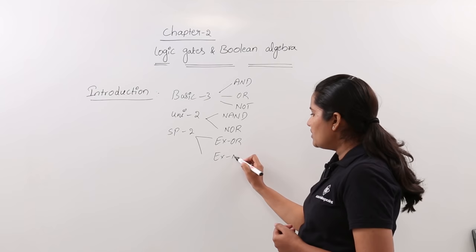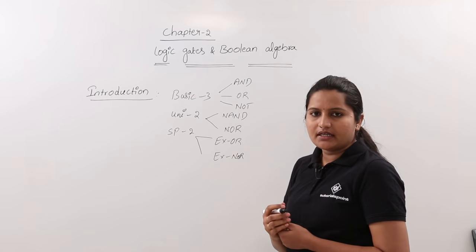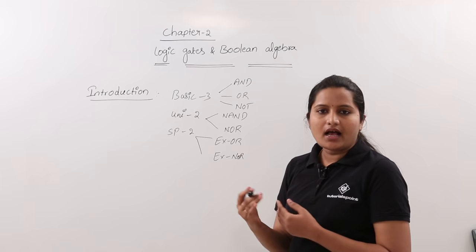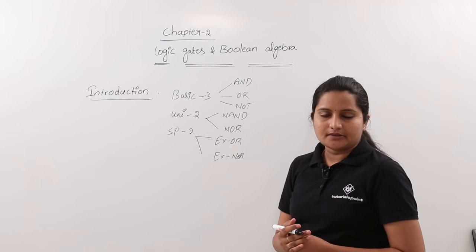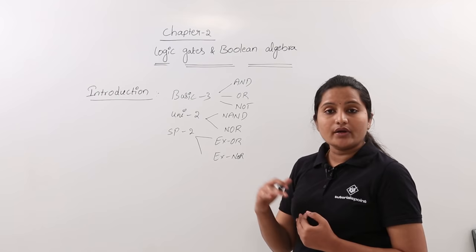XOR gate is an odd-one detector — we discussed this briefly in the last unit. Whenever you give an odd number of ones as input, XOR gate provides a high output. XNOR gate is an even-one detector. If you give an even number of ones to the XNOR gate, it is going to provide one at the output.